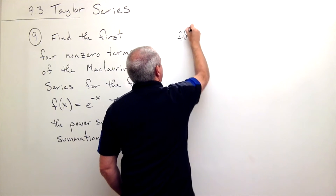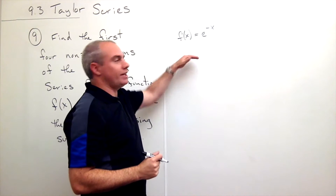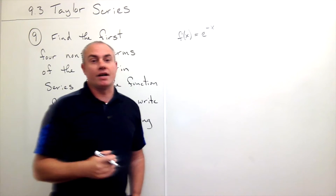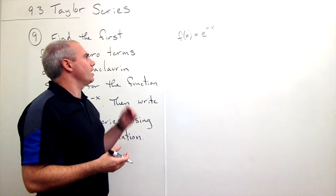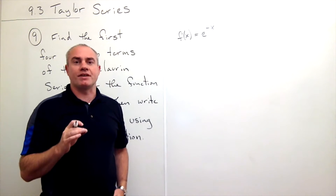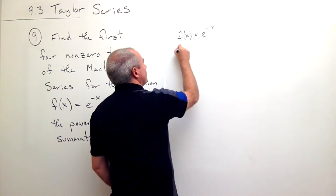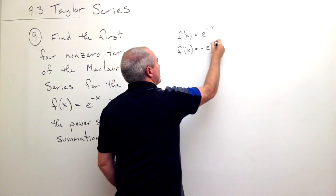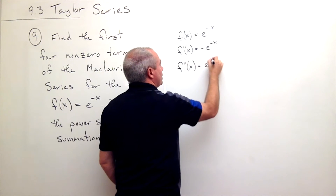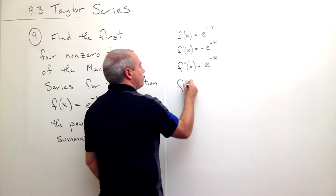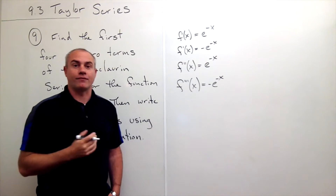So I write down f of x is equal to, in this case, e to the negative x. Then what I want to do is I just want to take a bunch of derivatives of that function. There are a couple of steps to finding a Taylor series or a Maclaurin series, and if you just take it one step at a time it's really not that hard — what becomes difficult is when you start mixing up the steps. So the first thing you do: take a bunch of derivatives of the function. We get f prime of x is negative e to the negative x, f double prime of x is equal to e to the minus x, f triple prime of x is negative e to the negative x. I think we get the pattern here — it's just going to flip back and forth between negatives and positives.